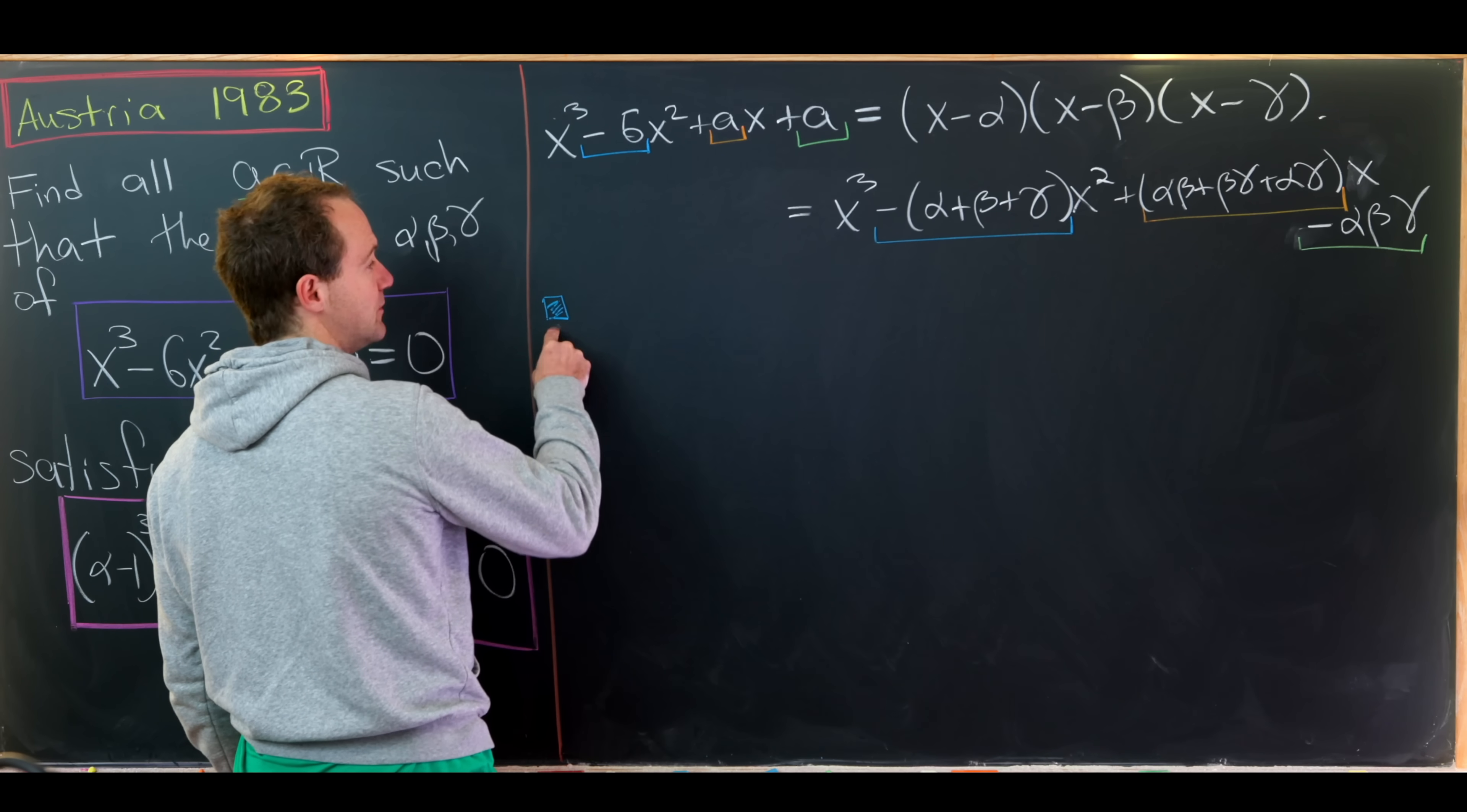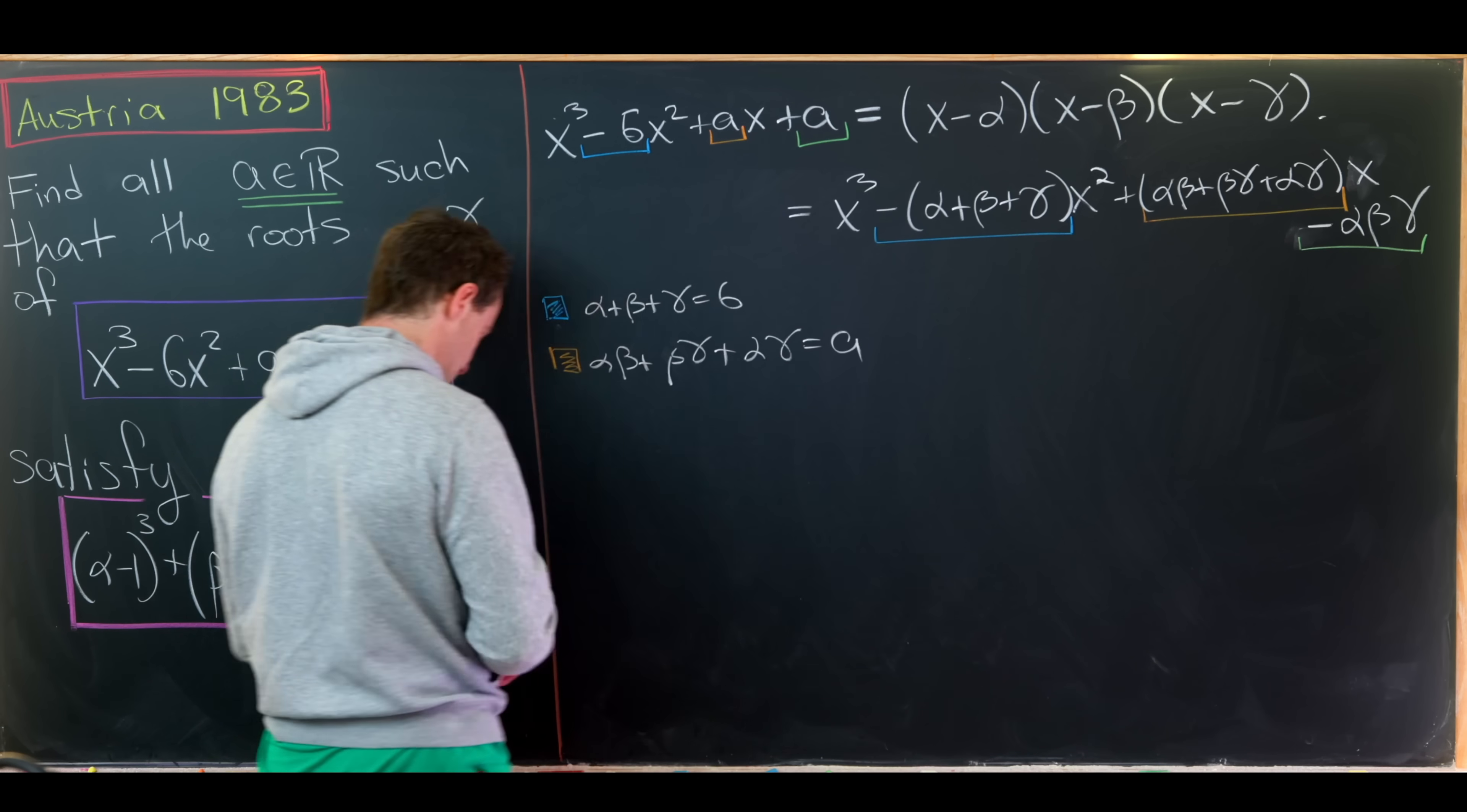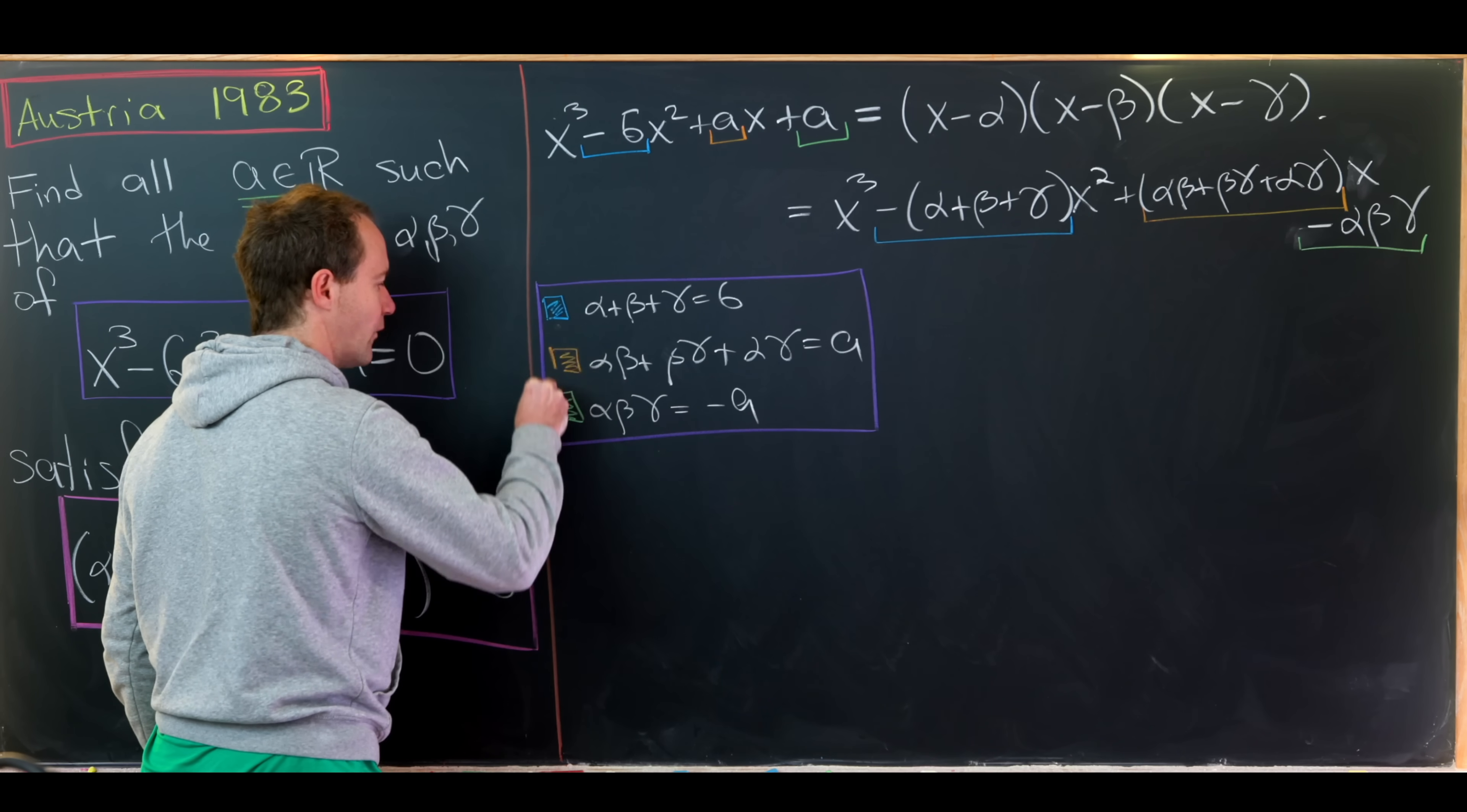From this blue bit, we get alpha plus beta plus gamma equals 6. And then from this orange underlined bit, we'll have alpha beta plus beta gamma plus alpha gamma equals a. And then finally, from the green underlined bit, we'll have alpha times beta times gamma equals minus a. So that's looking good. We've got this nice system of three equations involving really four variables: alpha, beta, gamma, and a.